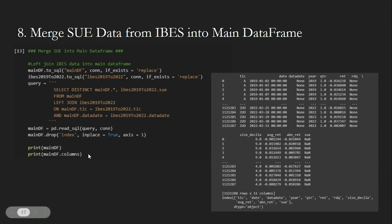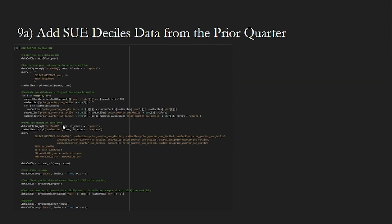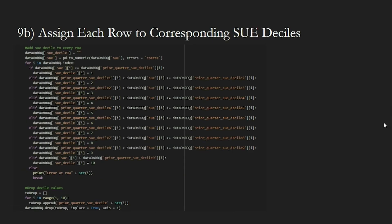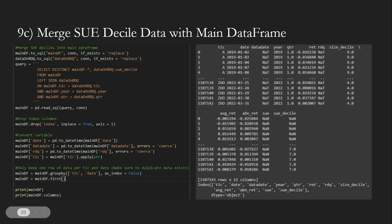We then merge the SUE data back into the main data frame using the data date we previously added to IBES. Next, we use the shift function to add SUE decile data from the prior quarter to avoid survivorship bias in our data. We use a group-by object to make the SUE decile assignment easier. Now that we have the SUE decile values from the previous quarter, we can assign each row of data a SUE decile. However, we must use a for loop since we are ranking SUE in the prior SUE decile column, so we cannot simply use the rank function like we did with size deciles. Finally, we left join the data back into the main data frame based on the year and quarter of the data.